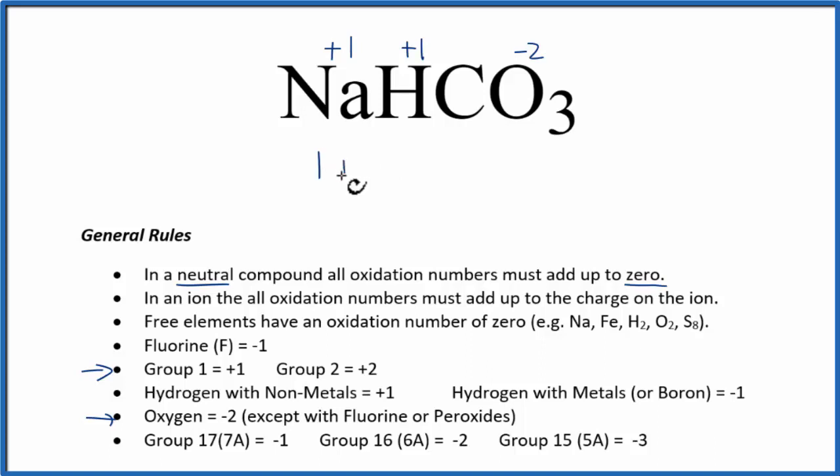We could say 1 plus 1 plus, since we don't know the carbon, we'll call it x, minus 2, but we have 3 oxygens, so we'll multiply that by 3. All of that has to equal 0, because this is a neutral compound.